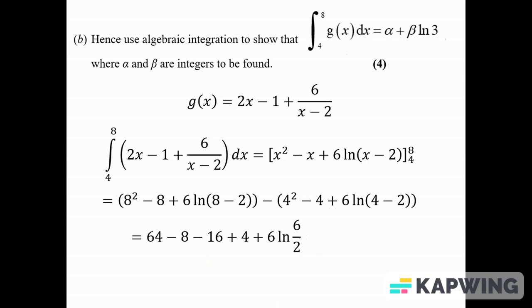I'll do the calculation on the calculator because otherwise I'll probably go wrong. I have 44 + 6 ln 3.